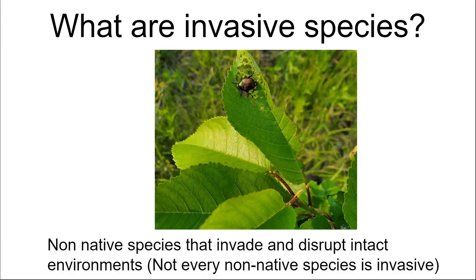Invasive species are thought to be the second most common cause of extinction and species loss, after habitat loss. You can have a habitat full of green stuff but nothing living on it. It's almost like a plastic plant — it would still provide oxygen and absorb carbon, but it wouldn't support any other species. That's why invasive species are bad.